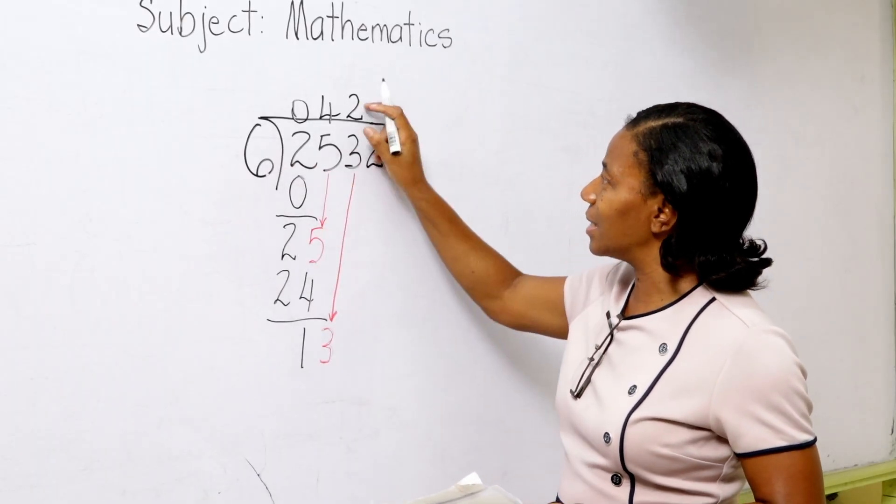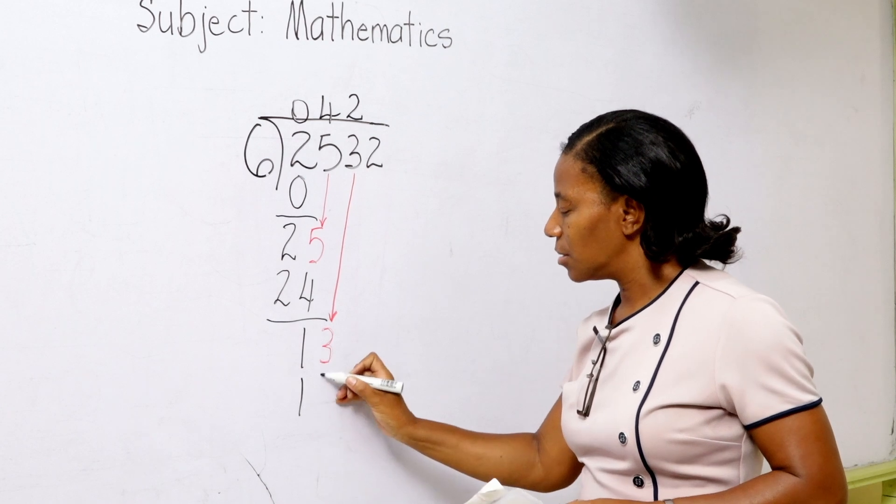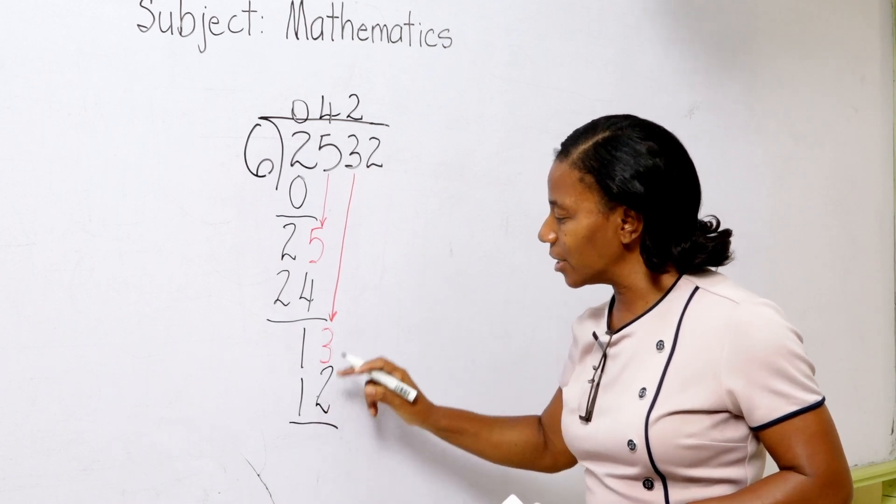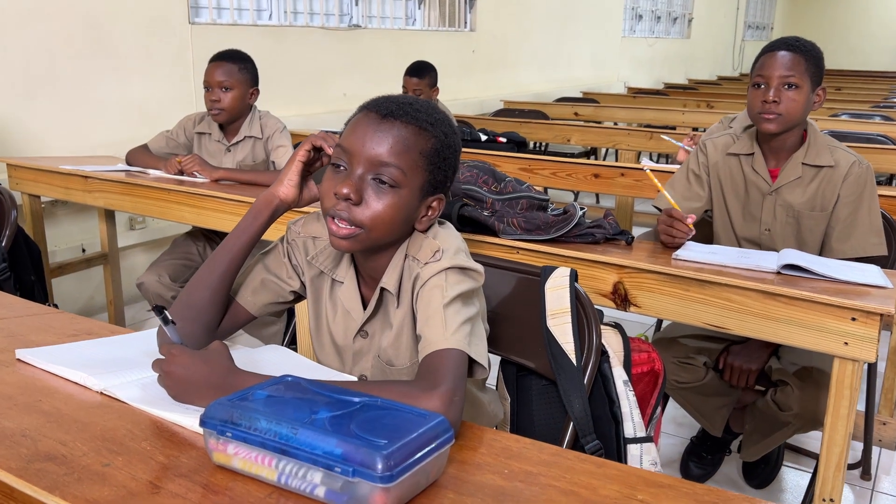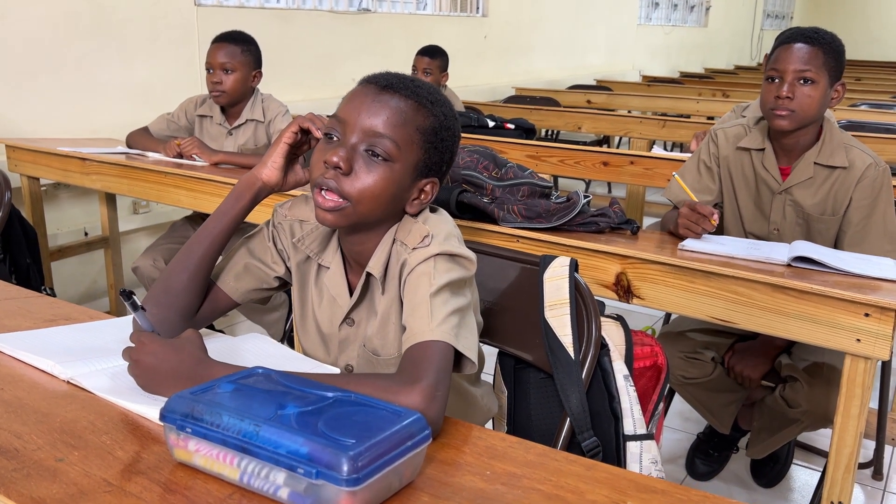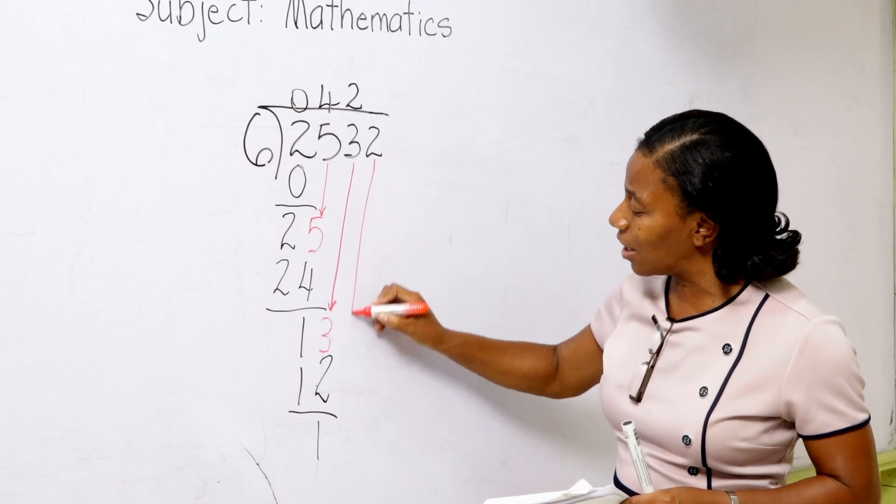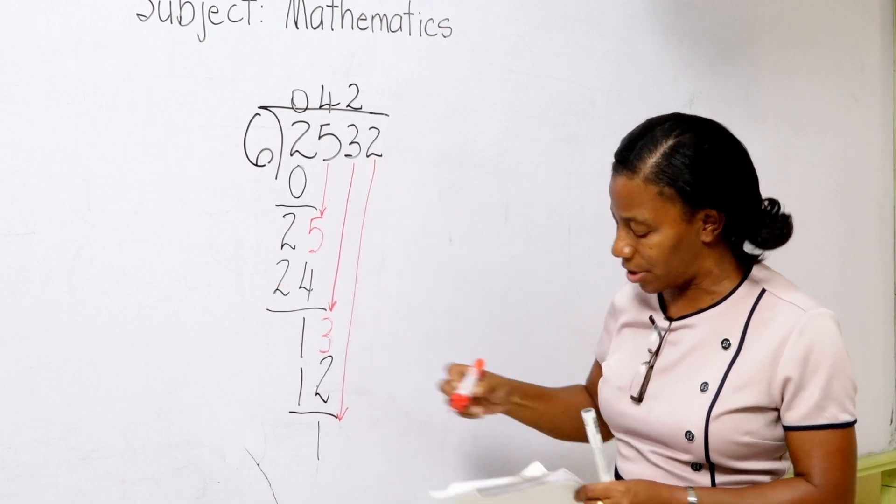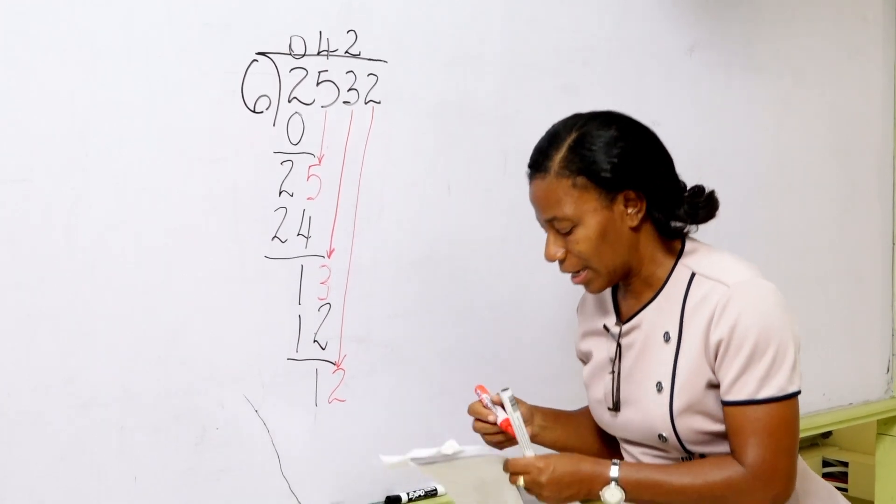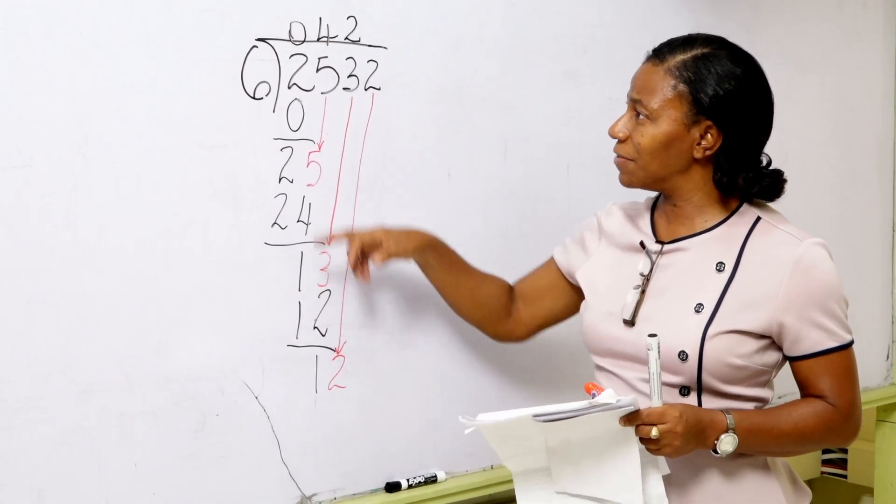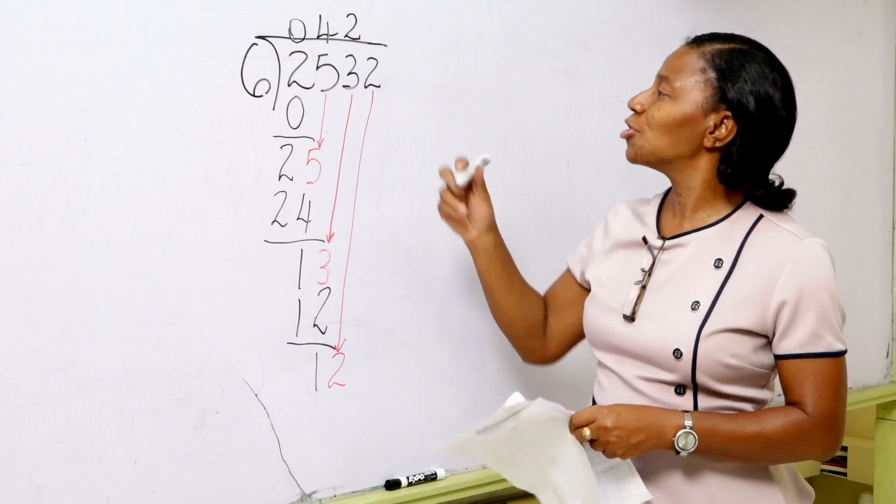And then we are going to say 6 times 2? 12. And when we take 12 from 13, how much do we have left? 1. And we are going to look if we have anything remaining here and we realize that we have another one. So we are taking it down. And this is the numeral 2 that we are taking down. And we are going to say 12 divided by 6 gives 2 times.